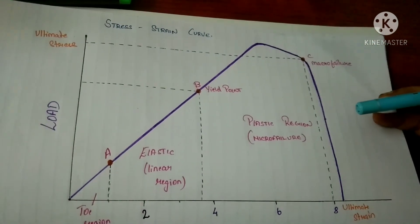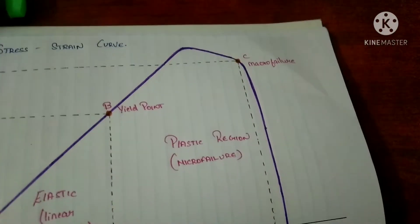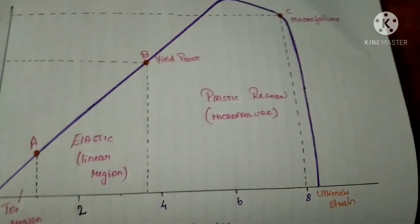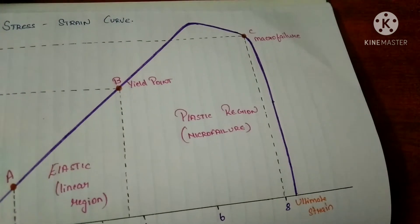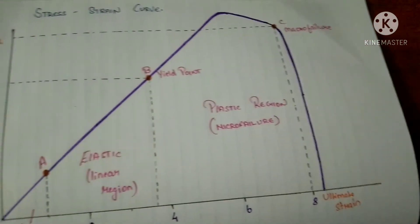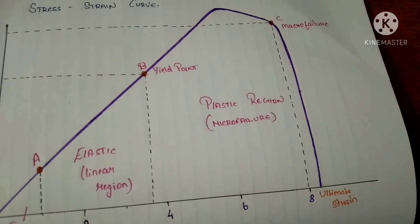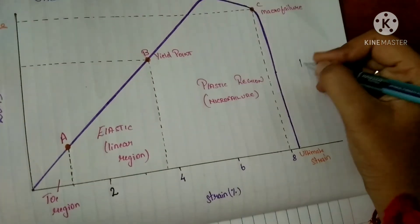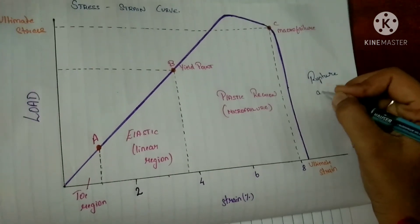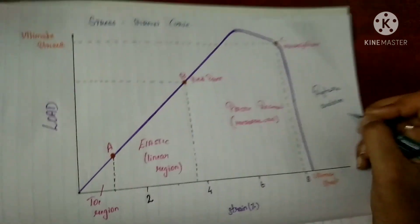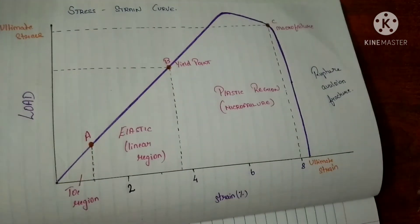This point is termed the ultimate stress and ultimate strain. If the failure of a ligament or tendon occurs at the middle of the structure, it is called a rupture. If the failure occurs at a bony attachment, it is known as avulsion. If the failure occurs exactly at a bone, it is called a fracture. To summarize: rupture occurs at the middle of the structure, avulsion at a bony attachment, and fracture at the bone.